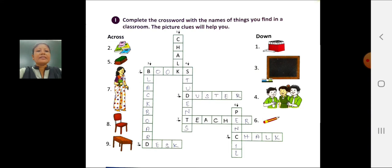Sixth picture is pencil. Then write in the crossword sixth number, P-E-N-C-I-L, pencil. Seventh picture is teacher. Then write the spelling of teacher in the seventh crossword, T-E-A-C-H-E-R, teacher.